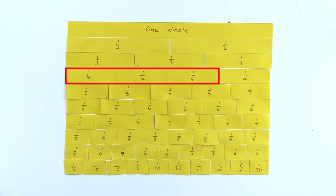Let's compare three quarters to the other fractions on the fraction wall and see if we can find combinations that are equivalent or equal to three quarters.